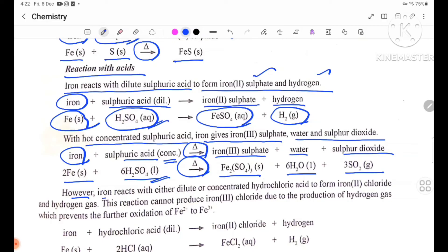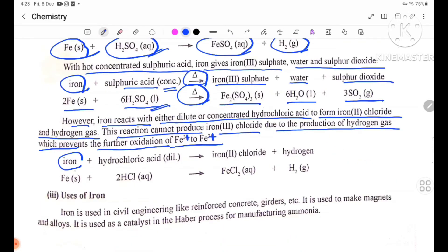However, iron reacts with either dilute or concentrated hydrochloric acid to form iron(II) chloride and hydrogen gas. This reaction cannot produce iron(III) chloride due to the production of hydrogen gas which prevents the further oxidation of Fe2+ to Fe3+. Iron plus dilute hydrochloric acid forms iron(II) chloride plus hydrogen. Fe solid plus HCl forms FeCl2 aqueous plus H2 gas.